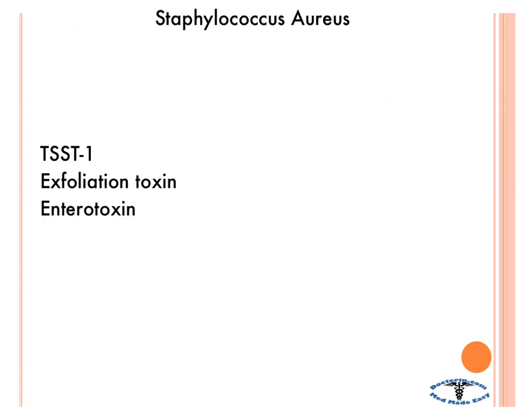Now let's talk about the toxins. The first and biggest one is TSST-1, and this is a superantigen. Just like a regular antigen, it binds to MHC2 and T cell receptors, but a superantigen binds to a huge number of MHC2 and T cell receptors at once. So you get polyclonal T cell activation — not just monoclonal — because you're activating a massive number of T cells simultaneously. You get this inflammatory overload in the body, and then your body just kind of shuts down.